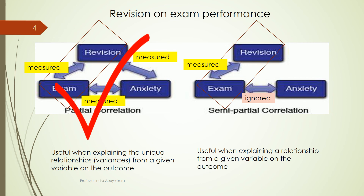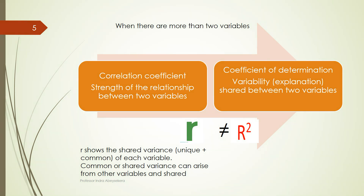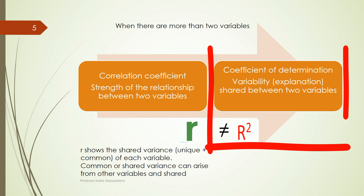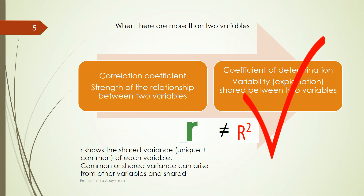The correlation coefficient speaks about the strength of the relationship between two variables — it is denoted with small r. If there are only two variables, we can square it and get the coefficient of determination, which explains the shared variance between the two variables. The correlation coefficient talks about the strength of the relationship, while the coefficient of determination talks about the variability — the amount of explanation of the outcome from one predictor.